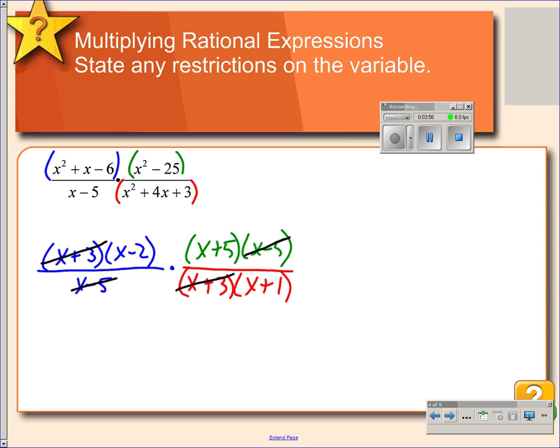Once I have finished canceling, then whatever's left will be our simplified version. So x minus 2 times x plus 5 over x plus 1. That's our simplified version. If you want, you can multiply the factors together in the numerator. If you don't, just leave it like it is.